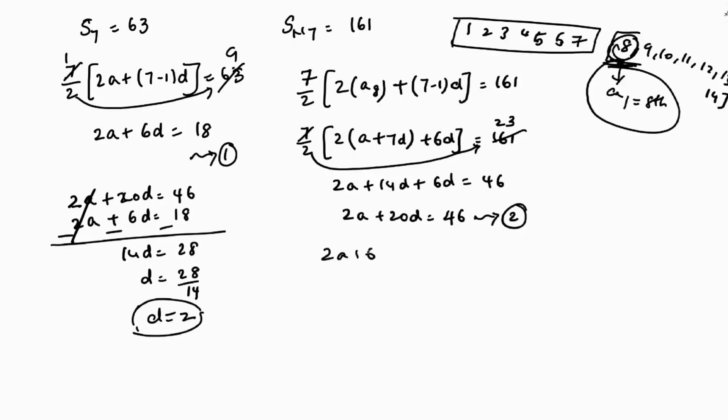Now if I substitute in the first equation, 2a plus 6d is 18. 2a plus 6 into 2 is 18. 2a plus 12 equals 18. 2a equals 18 minus 12. 2a equals 6. So a equals 6 by 2, so a is 3.